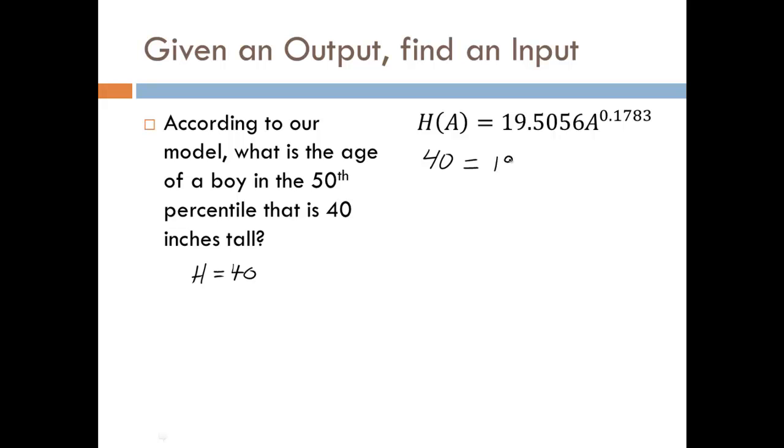So we'll have 40 equals 19.5056 times A to the 0.1783 power. So to solve for A the first thing we need to do is divide both sides by 19.5056. And I'll wait to do that till the end. So on the left side we have 40 divided by 19.5056, whatever that's going to be.